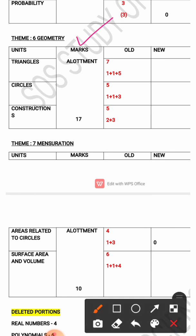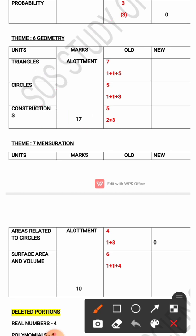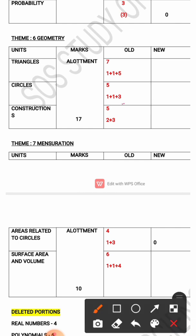Theme 6 is Geometry. The lessons under this theme are Triangles, Circles, and Constructions, with a total marks allotment of 17. In the previous year's paper, Triangles was allotted 7 marks with 3 questions. Circles was allotted 5 marks — 1-mark 2 questions and 3-mark 1 question. Constructions was allotted 5 marks — 2-mark 1 question and 3-mark 1 question.